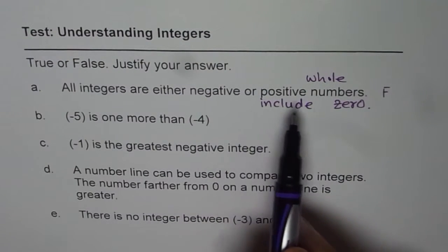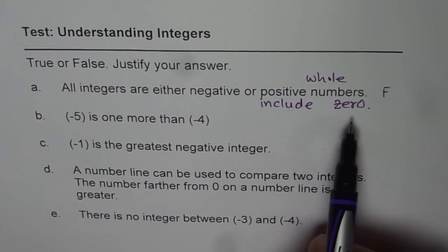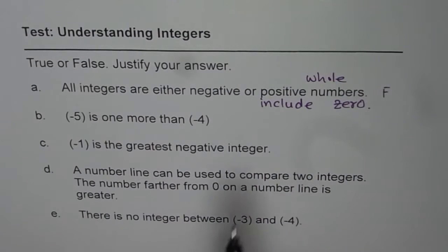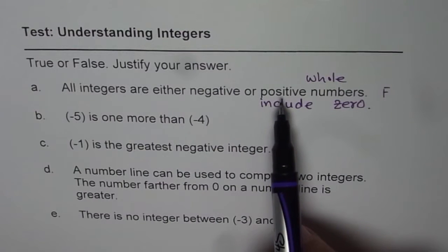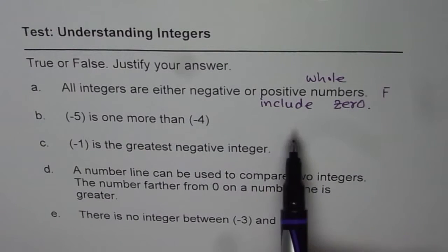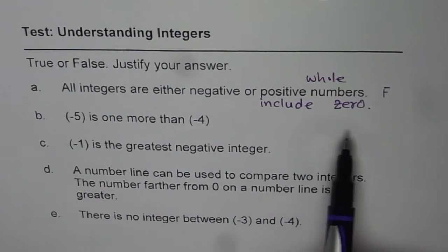If we say negative or positive we are not including zero. So, all integers are either negative, positive, or whole numbers including 0. That should be your answer.